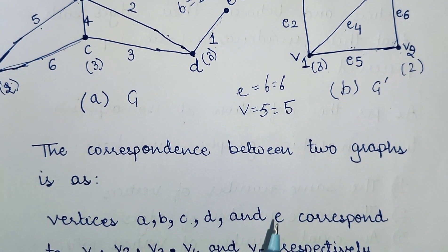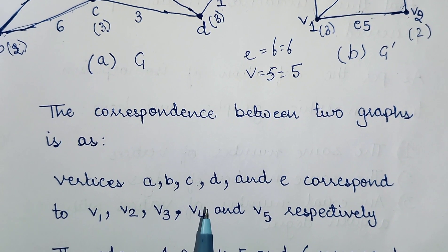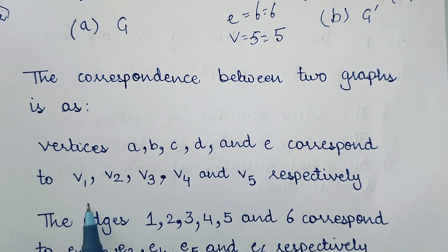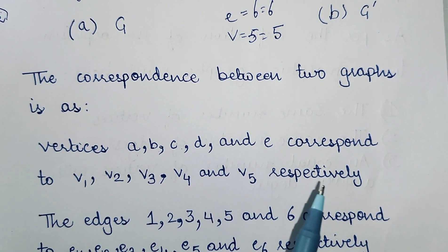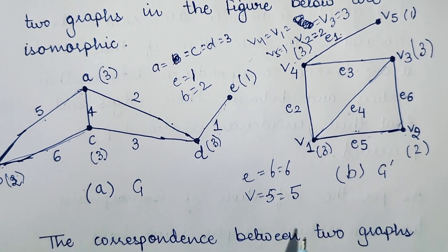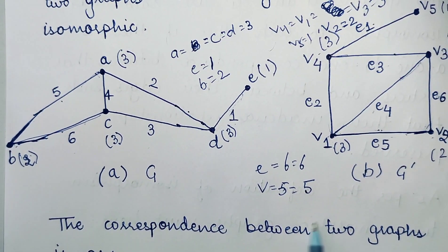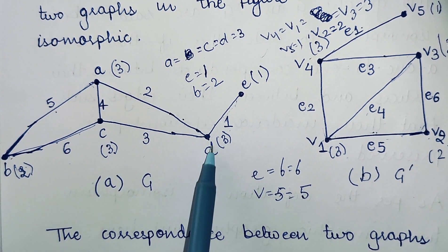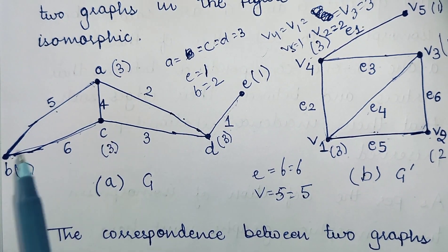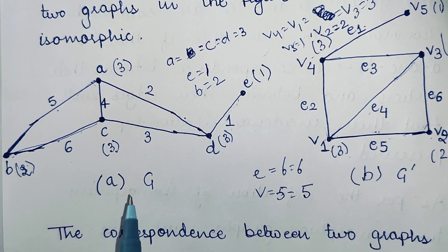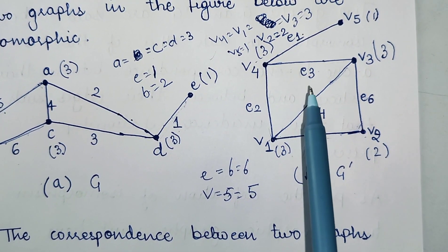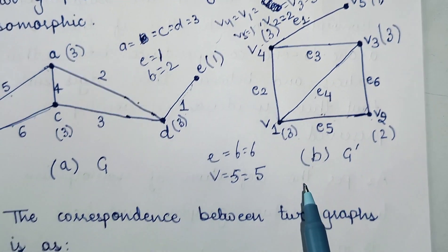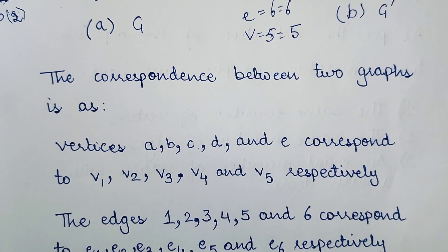The correspondence between the graphs is as follows. The vertices A, B, C, D, and E in graph A correspond to the vertices V1, V2, V3, V4, and V5 in graph B respectively.